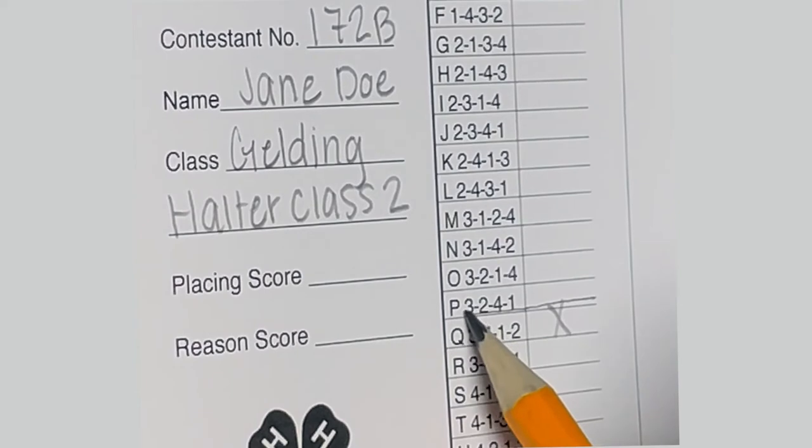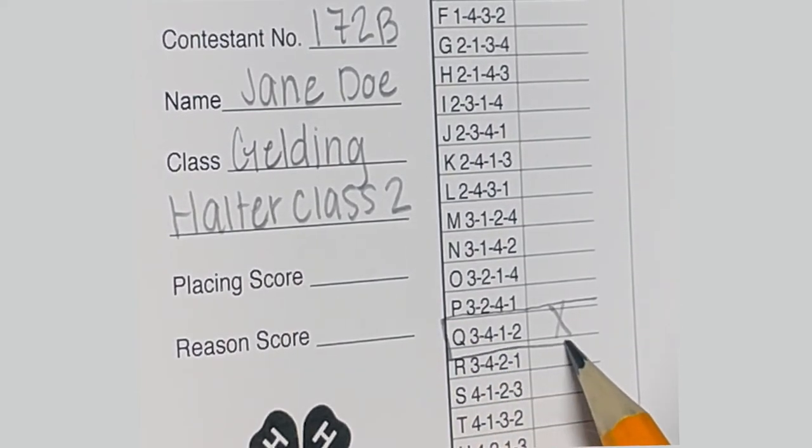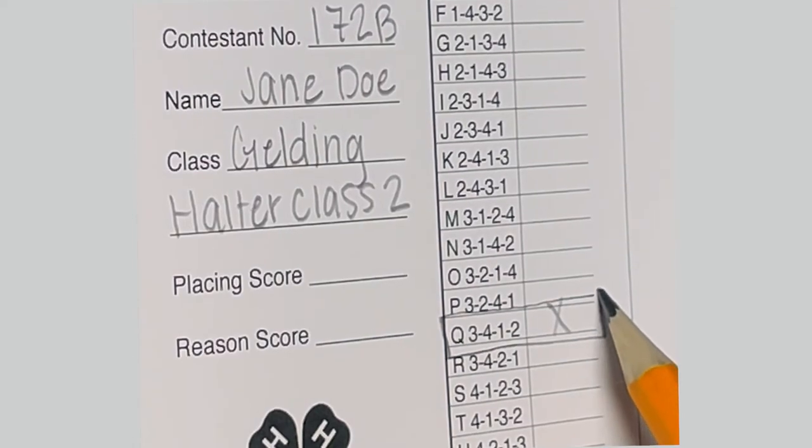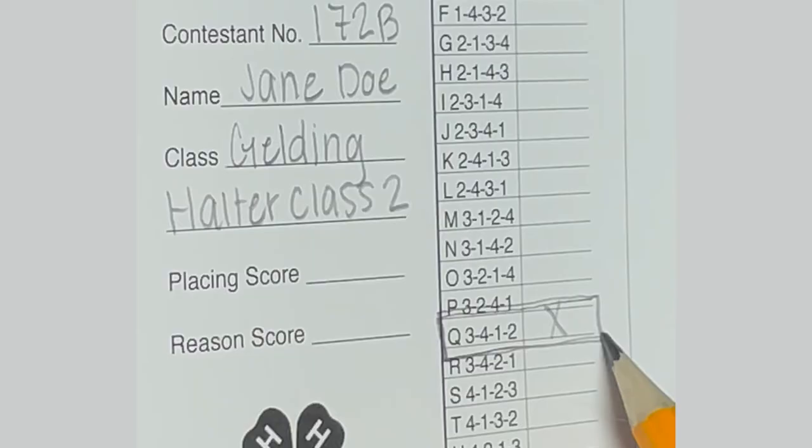Not only will I put a marker, I will also draw a box around the selected placing order. This provides extra clarification and confirmation that 3412 is the placing order that I have judged, allowing the person who is inputting scores into the computer to have full confidence in my placing and provide accurate results that I earned.